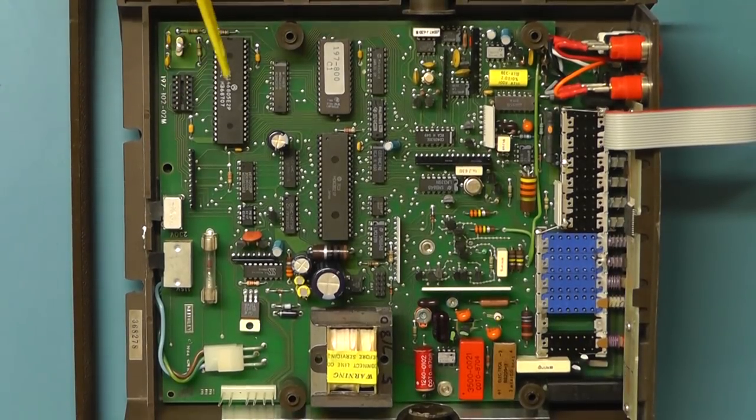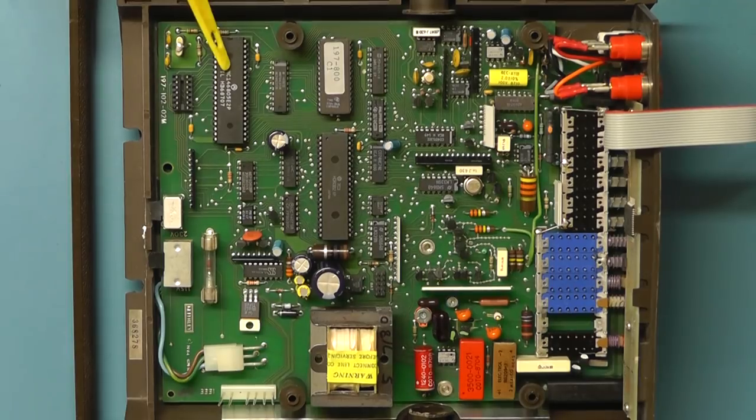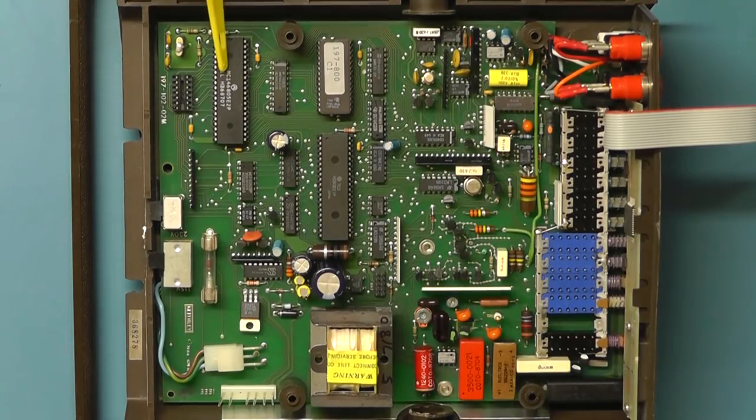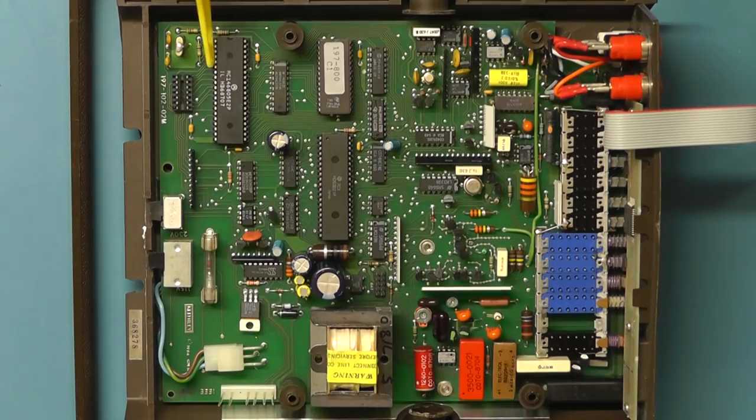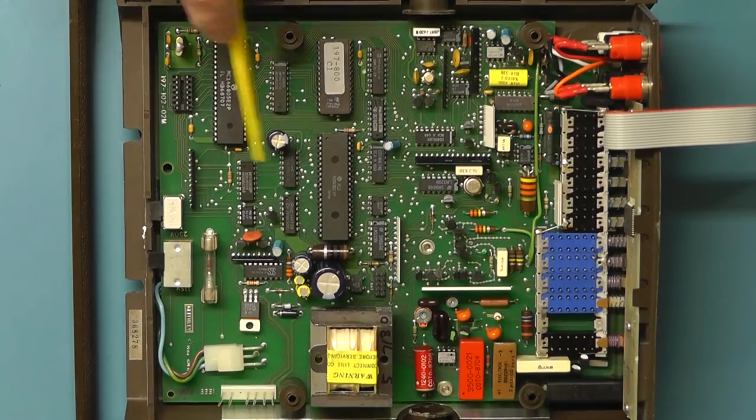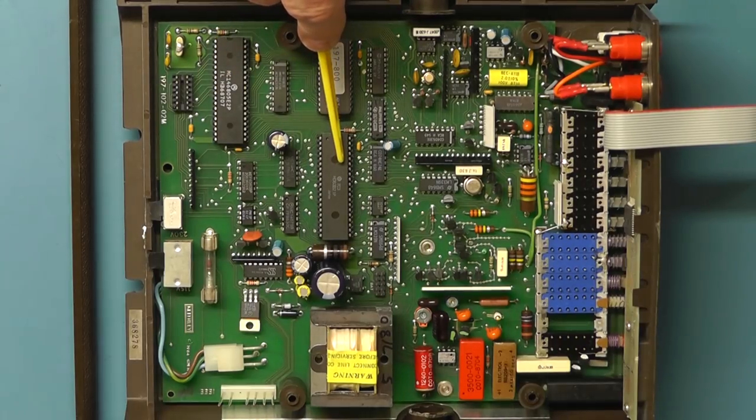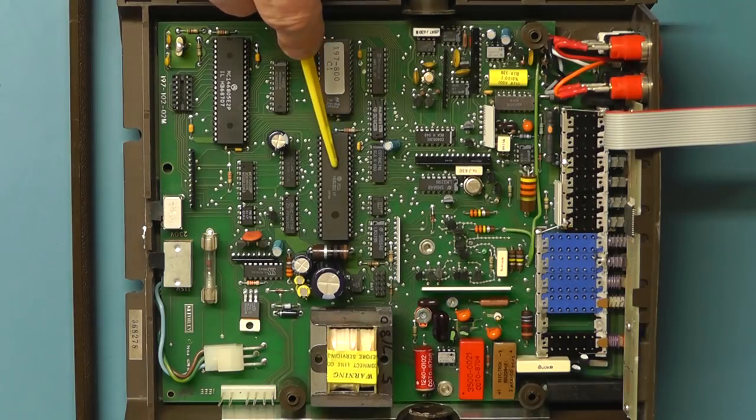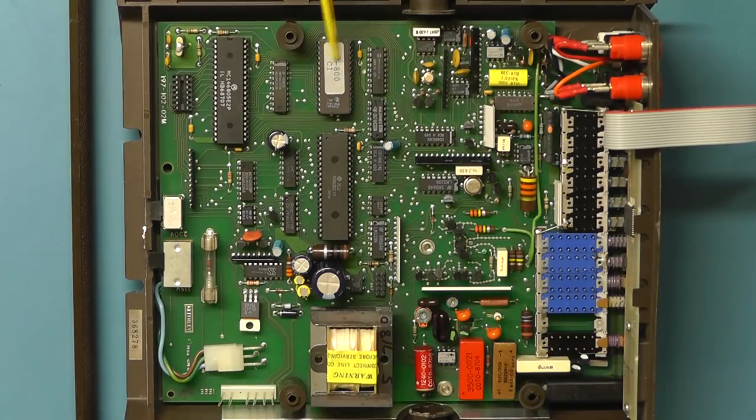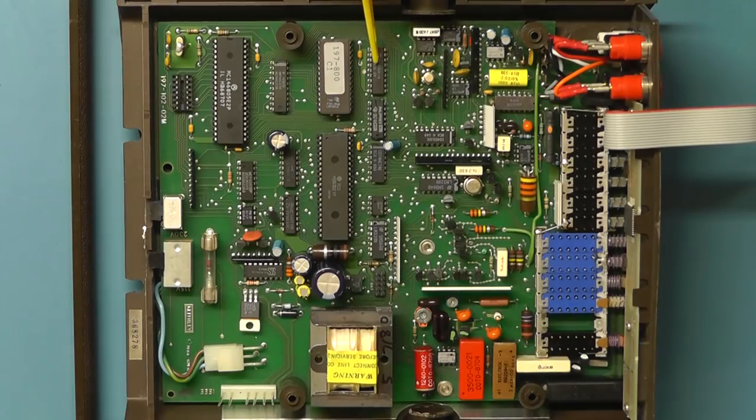The meter itself is controlled by a microprocessor IC there which is the same as we have before which is the Motorola MC146805 and there the other large IC is the PIA the peripheral interface adapter and there's the ROM with the software in for the program to run the meter. As before we have some RAM here, some static RAM which obviously holds the running program for the meter and also stores the data logging information.